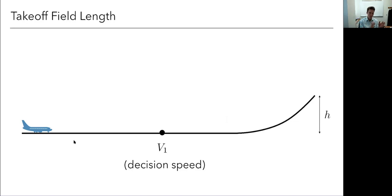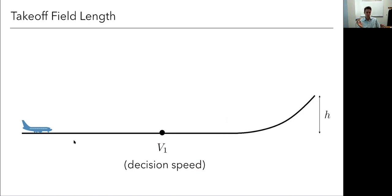At the decision speed V1, the pilot must decide: stop or continue. If an engine fails at a low speed, stopping is the right choice. If the engine fails at a high speed, there's not enough runway to stop - it actually takes less runway to take off than to stop. V1 is the speed that balances those two options. It is announced to the pilot, who should take their hand off the throttle at that point. Engine failure before V1 means stop; after V1 means continue and take off.